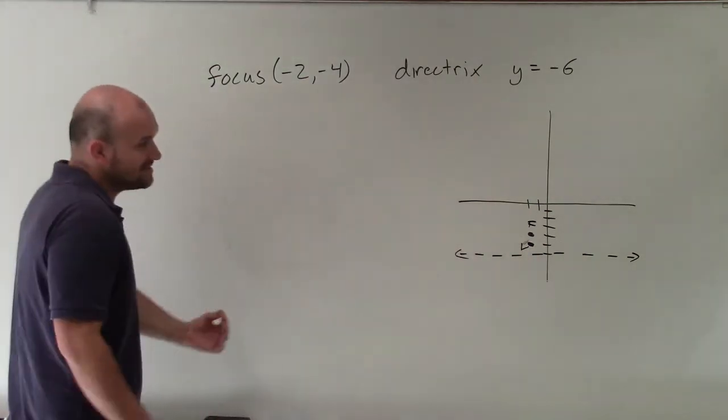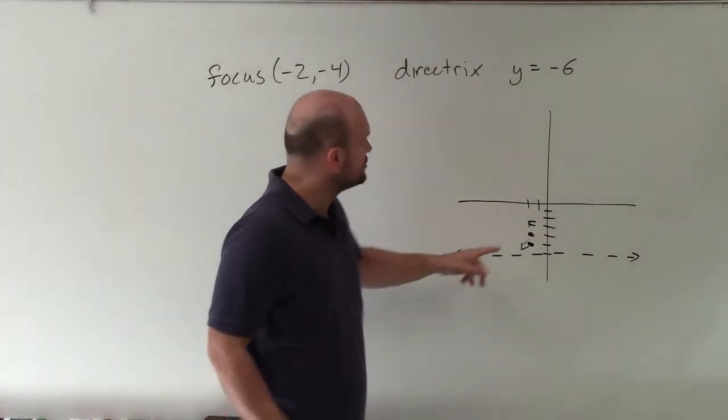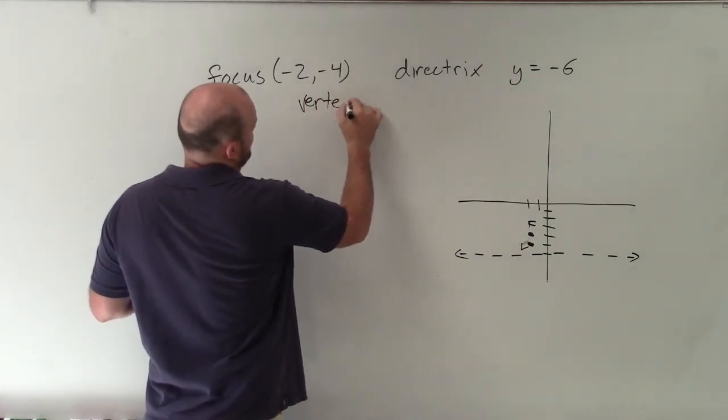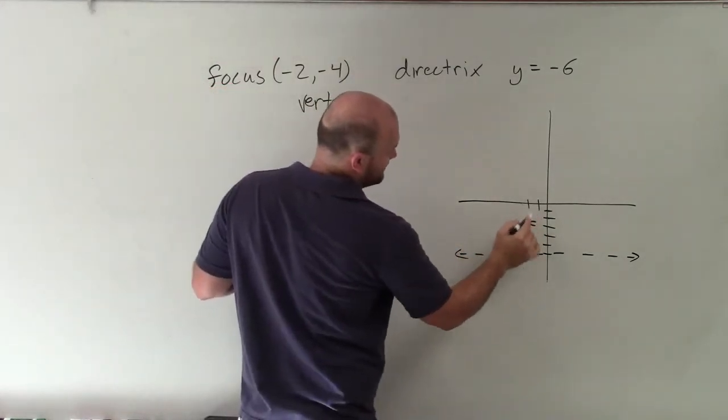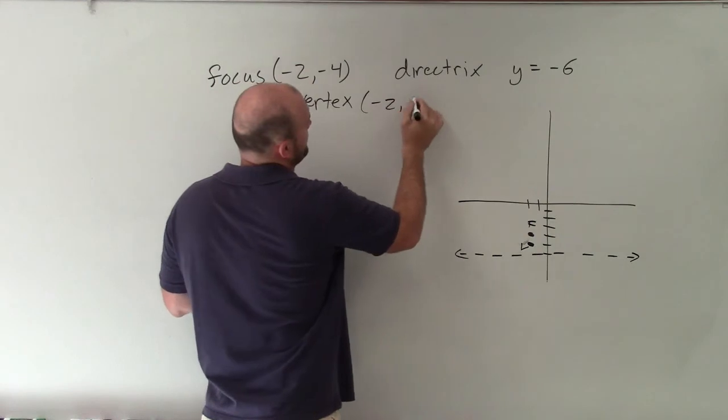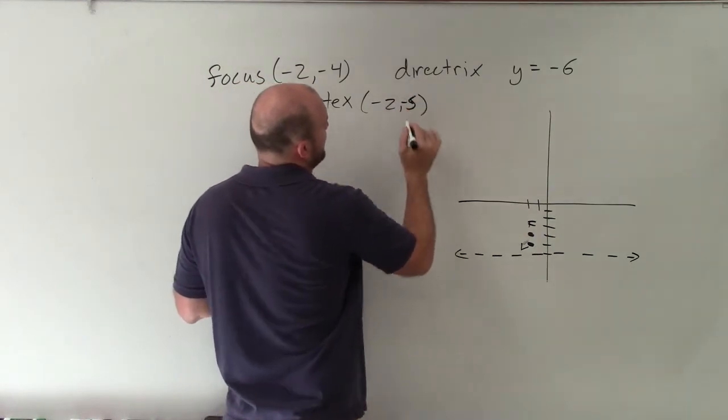OK, so once I know where the vertex is, I can determine that point and say the vertex is at the point negative 2, 5. Negative 2, negative 5. My apologies.